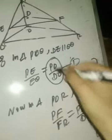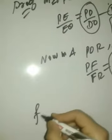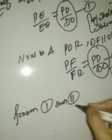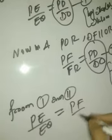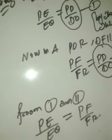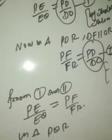Now have a look: from equation (1), PE/EQ = PD/DO, and from equation (2), PF/FR = PD/DO. Their right-hand sides are equal, so their left-hand sides are also equal. From (1) and (2), we have PE/EQ = PF/FR. So we have proved that PE/EQ = PF/FR. Now by the converse of Thales' theorem, in triangle PQR, if a line segment divides any two sides in the same ratio, then it is parallel to the third side.